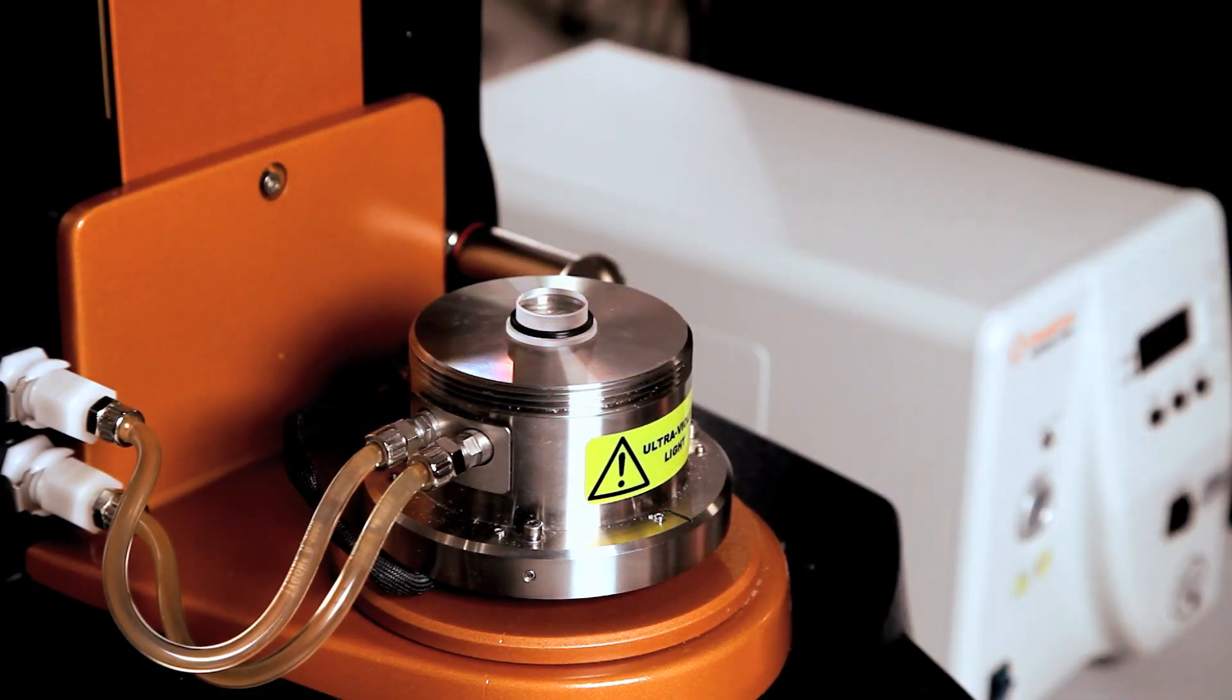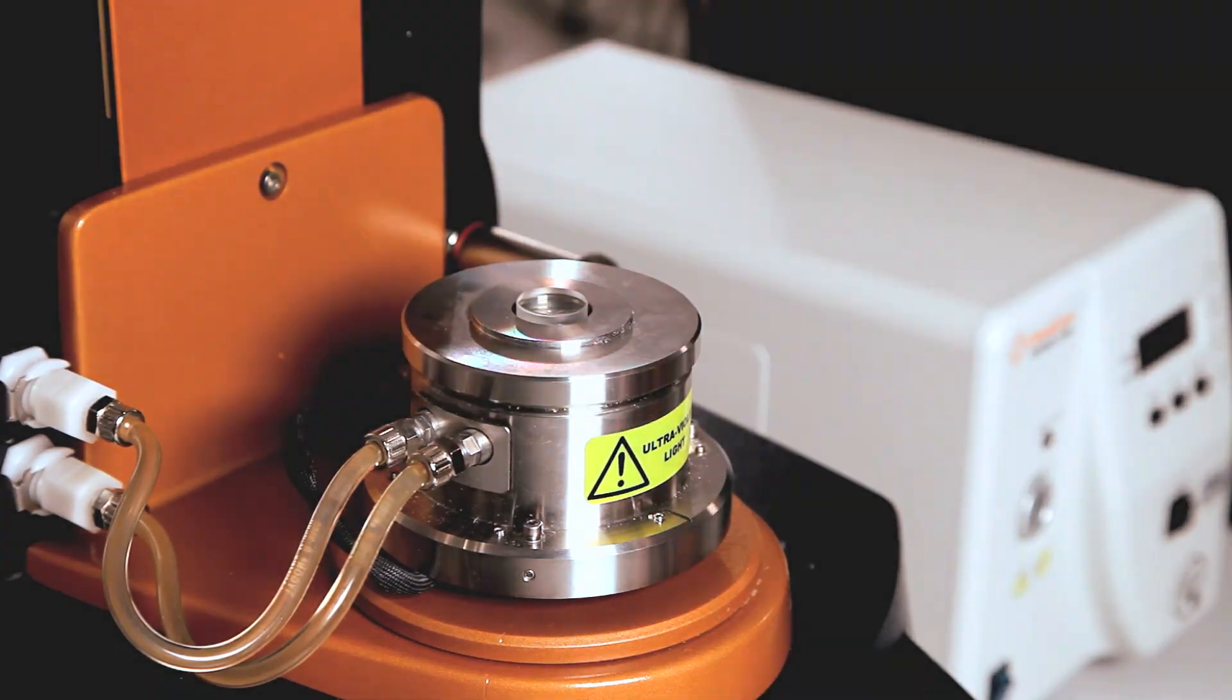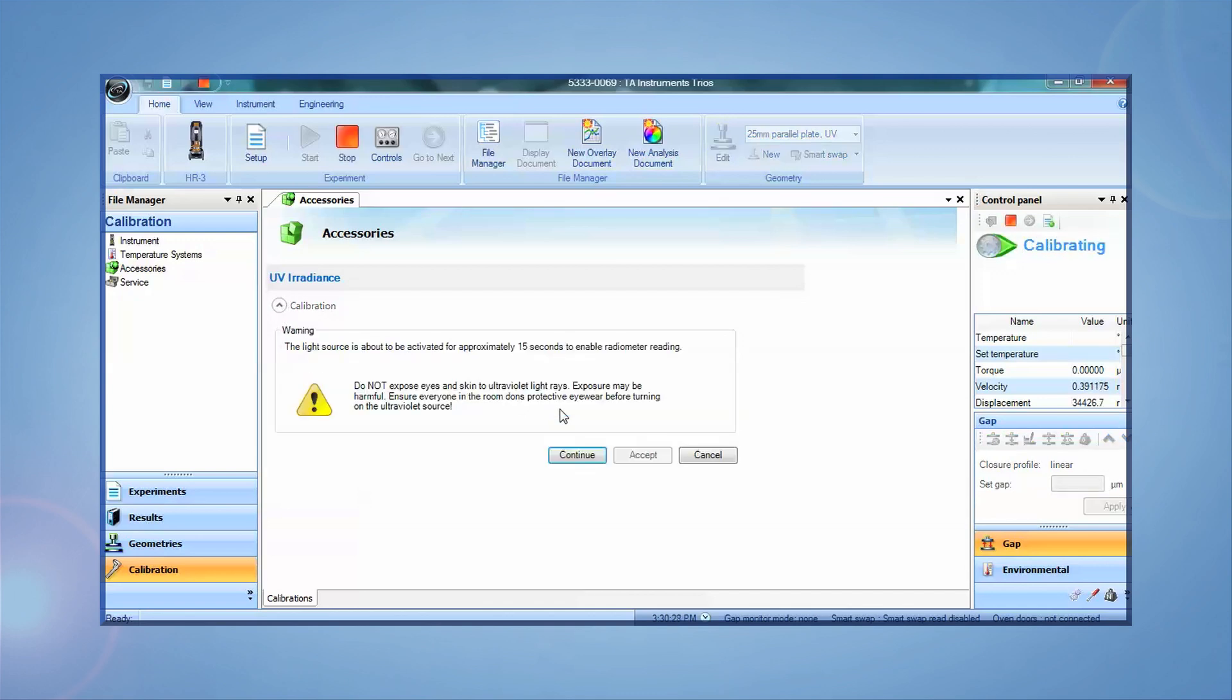After the LED source installation, it is necessary for an accurate measurement to calibrate the irradiance. Go to the TRIO software, Accessory Calibration, and follow the instructions.